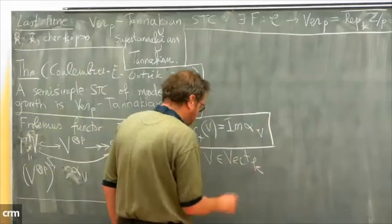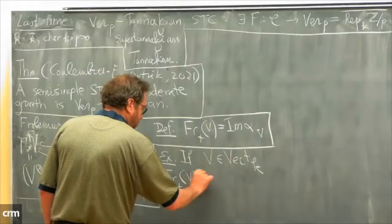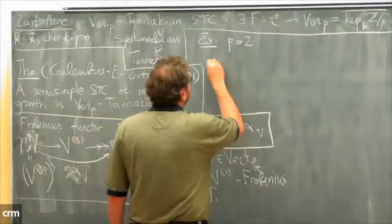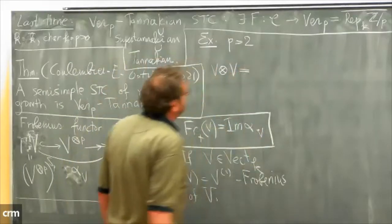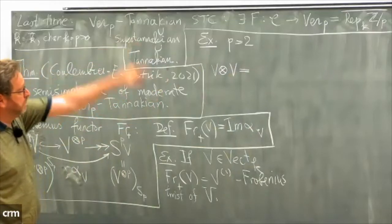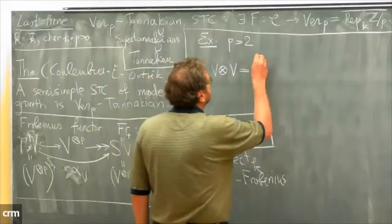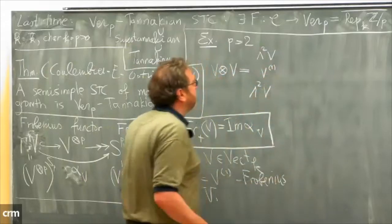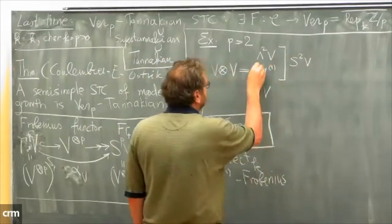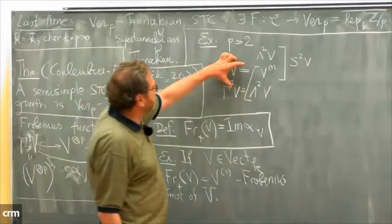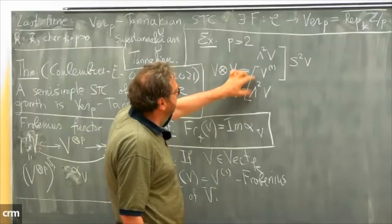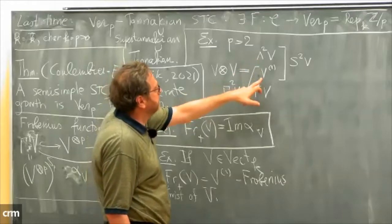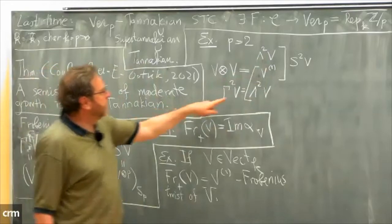For example, if V is a vector space, F-plus of V is just V^{(1)}, the Frobenius twist of V. To give an example for p equal to 2: V tensor V has a filtration of length three — there is Wedge^2 V on top, then V^{(1)}, then Wedge^2 V on the bottom. Symmetric squared of V has sub-object V^{(1)} with quotient Wedge^2 V, and Gamma^2 of V contains sub-object Wedge^2 V with quotient V^{(1)}.